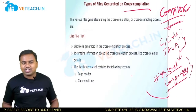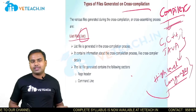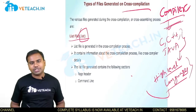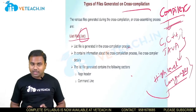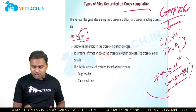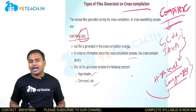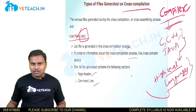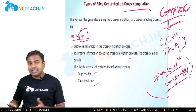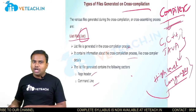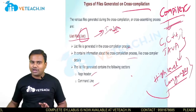So the first file is the list file — the dot LST file. When I am compiling my program, I get a file named with the dot LST extension. This LST file is generated by the cross compilation process only. It consists of information about the cross compilation process like cross compiler details. It will be divided into two parts: the page header and the command. This list file will show what header files are there, what the main programming is — like that it will frame as a list. Simply, we can say this is like an index path in our textbooks.